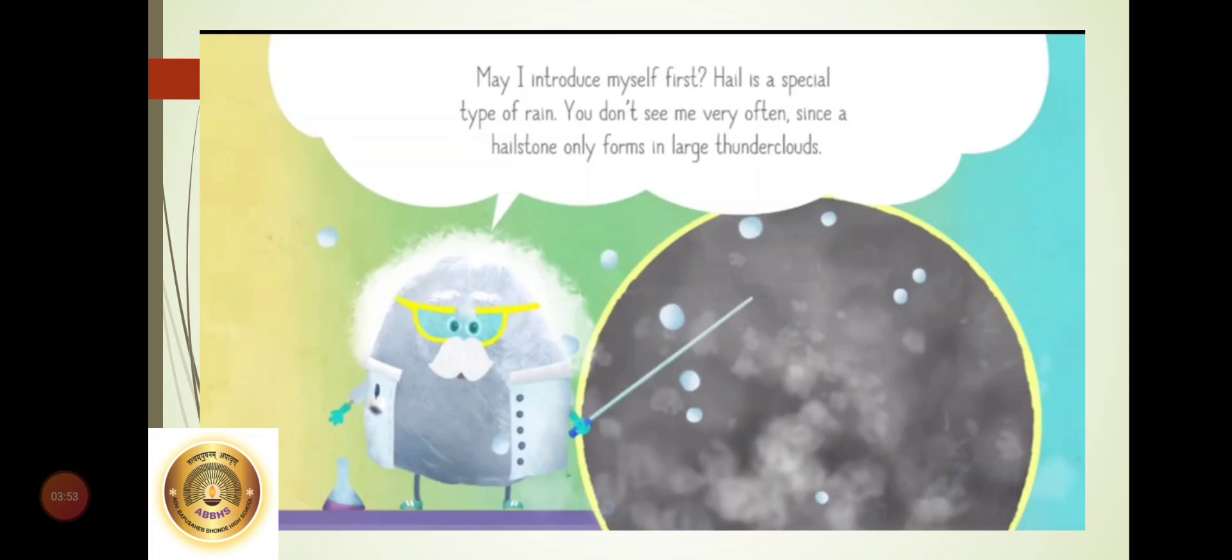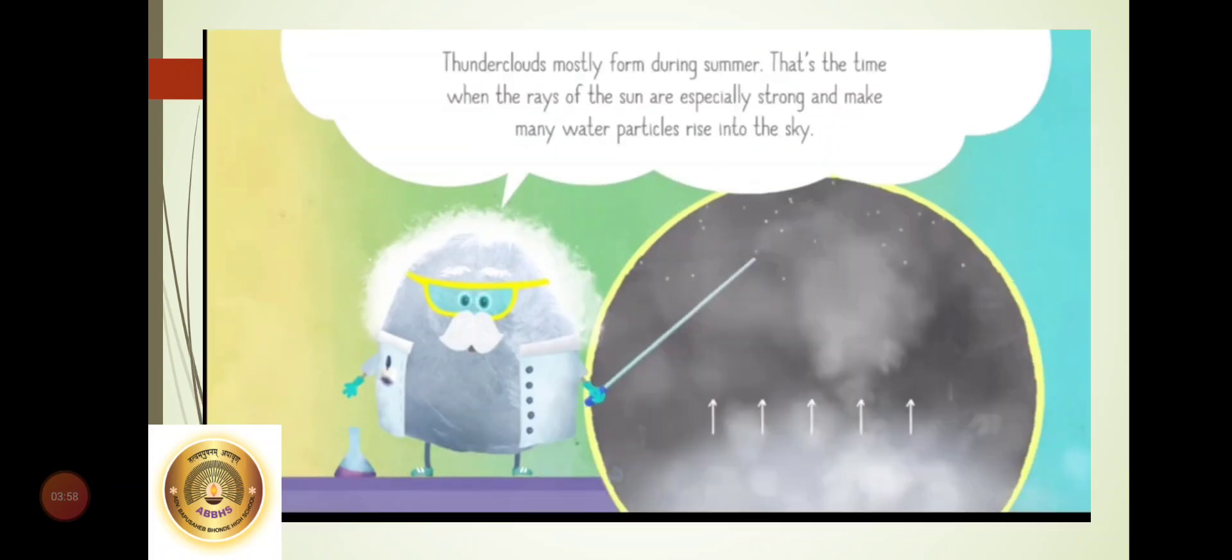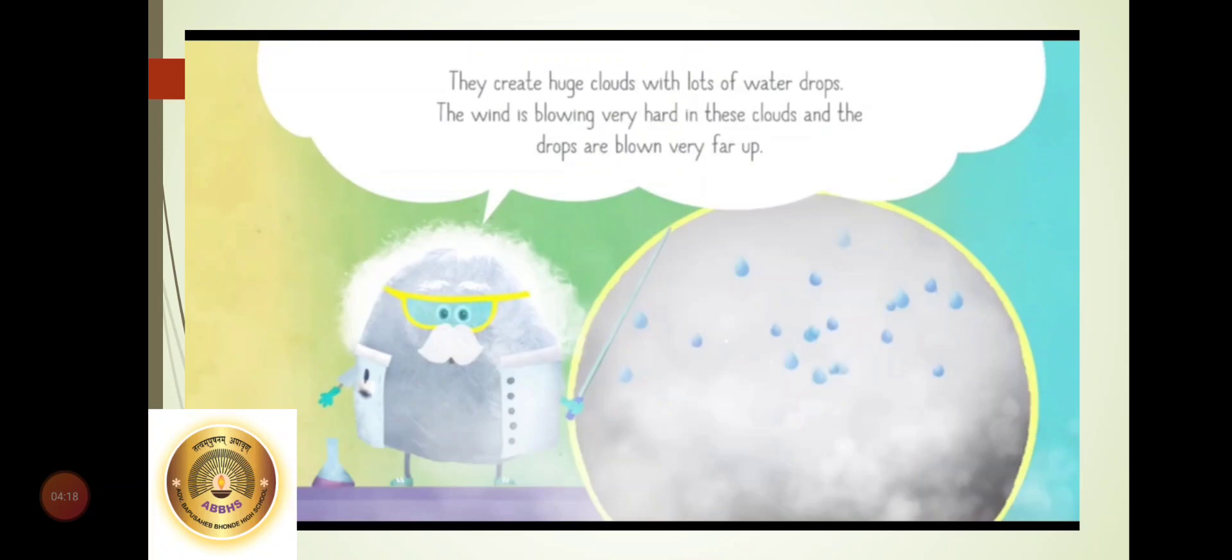You now know that there are water particles in the clouds that we see in the sky. Very high up in the sky, the water particles in the clouds turn into little bits of ice. Sometimes the very strong winds push these little bits of ice upward so they do not fall onto the ground. They go up and collect more water particles, which freeze onto them. Thus, the little balls get bigger and bigger. They turn into hailstones.